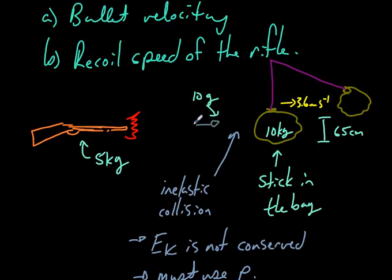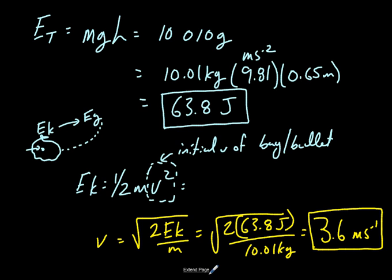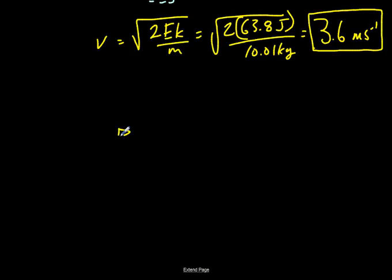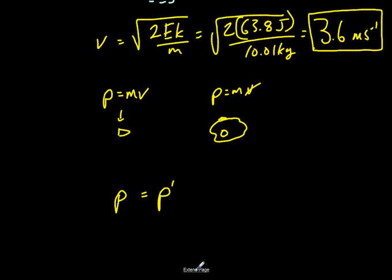Okay, so we're just algebraing this to get v by itself. So 2 times 63.8 joules, divided by 10.01 kgs, and don't forget the square root. 3.6, say, meters per second. Okay, perfect. So now we know this. After the bullet struck, this thing was moving at 3.6 meters per second. Now we have to go back, and we have to use momentum to solve this inelastic collision.